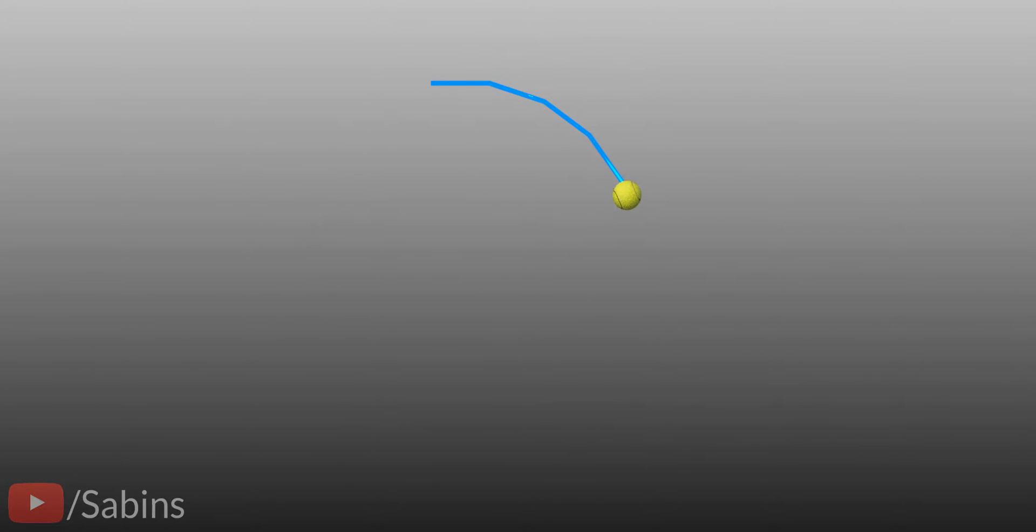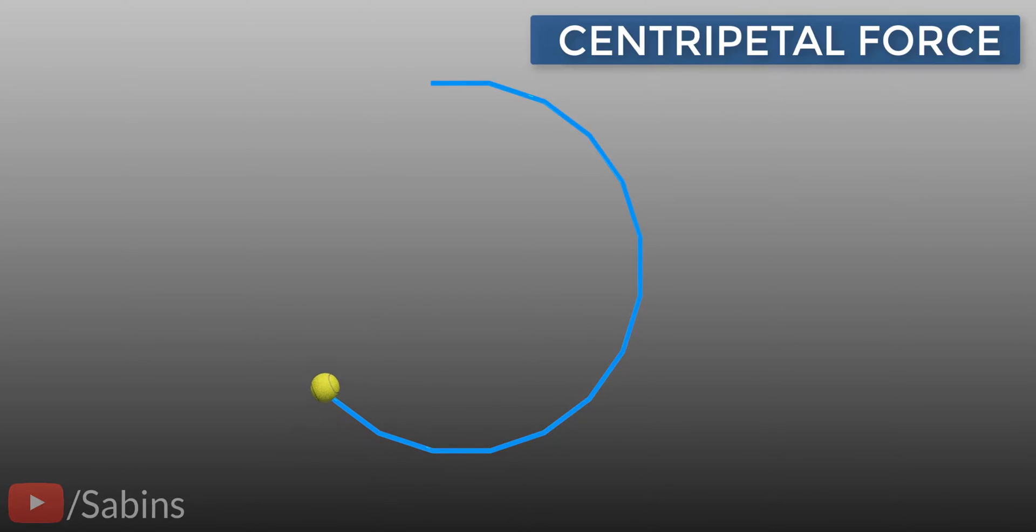Which means, if an object is always acted upon with a force perpendicular to its velocity, the object will move in a circle. This force is known as centripetal force.